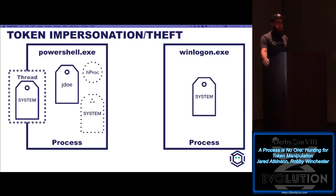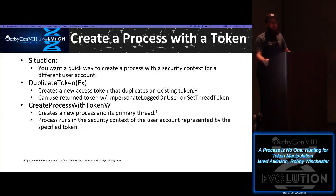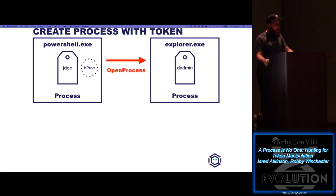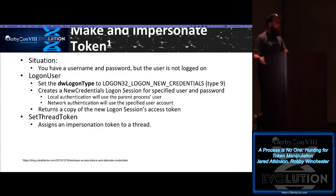The second procedure is create a process with a token. For one reason or another, the attacker wants to run a second process outside of their current context, but run it as a different user. Similarly, they'll call OpenProcess, DuplicateToken, get a copy of that token, but then call CreateProcessWithTokenW. For example: a domain admin is logged in, you call OpenProcess, then DuplicateToken to get a duplicate domain admin token, then call CreateProcessWithTokenW — that creates malicious.exe running as domain admin. Notably, malicious.exe's primary token is that domain admin token — that's an interesting differentiation when developing our hypothesis.